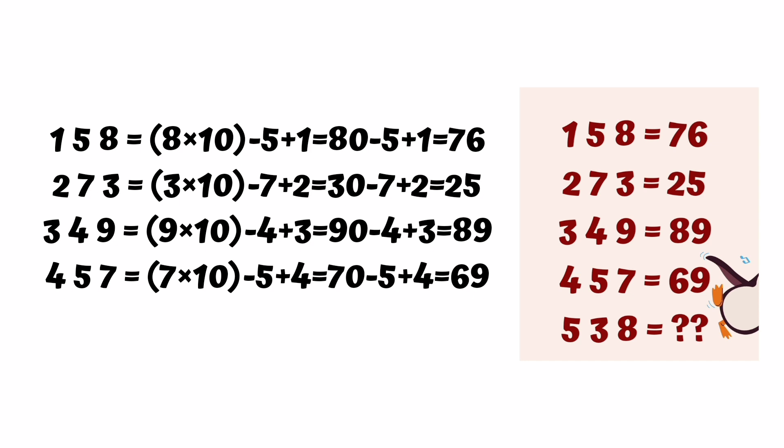Third row check: 9 times 10 minus 4 plus 3 equals 90 minus 4 plus 3 equals 89. Similarly, the fourth row value is 69. So all rows are satisfied, friends.